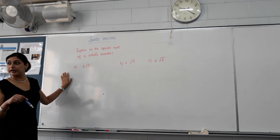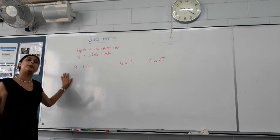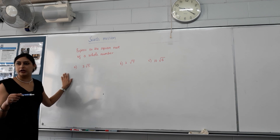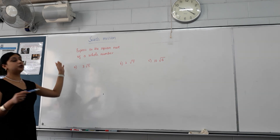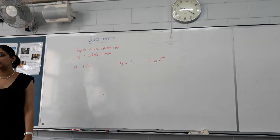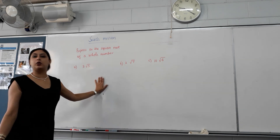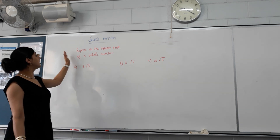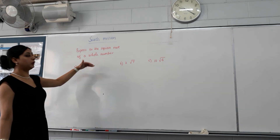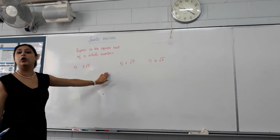We've learned how to simplify surds. Now we're going to learn the opposite of simplification — how to write something as an entire surd. Another way of asking that question is: express the following as the square root of a whole number.